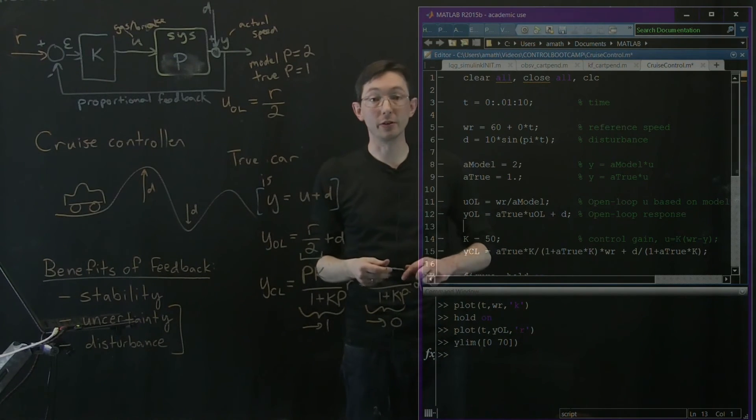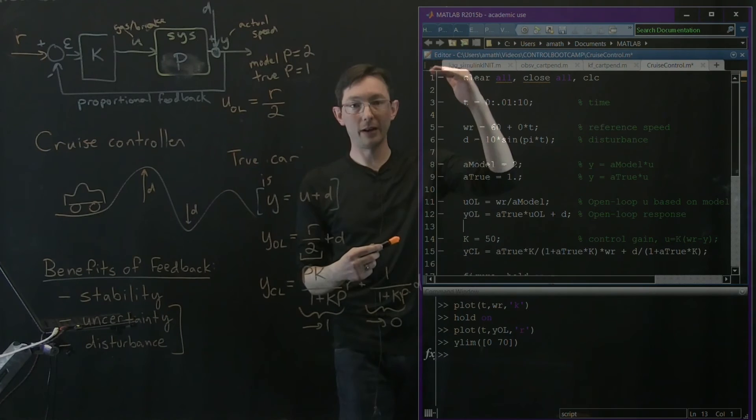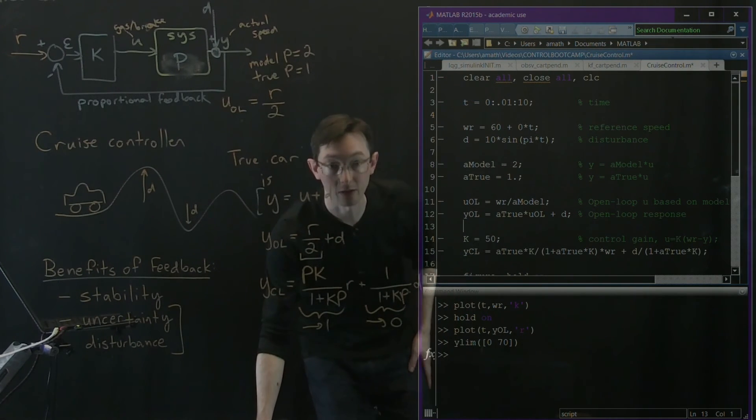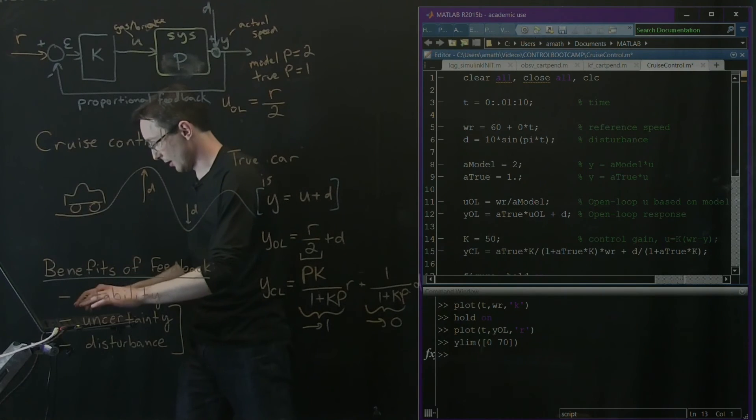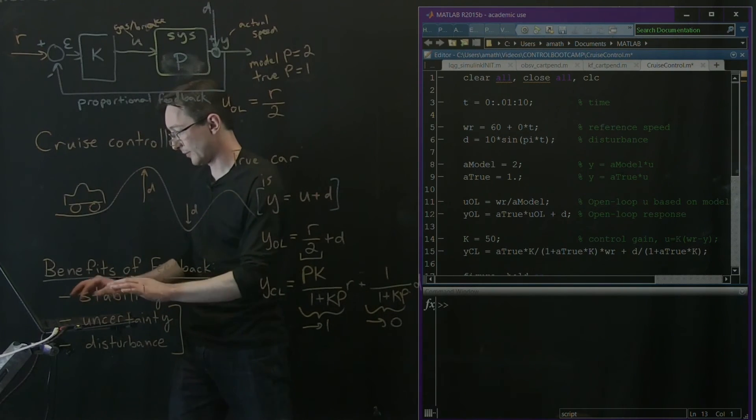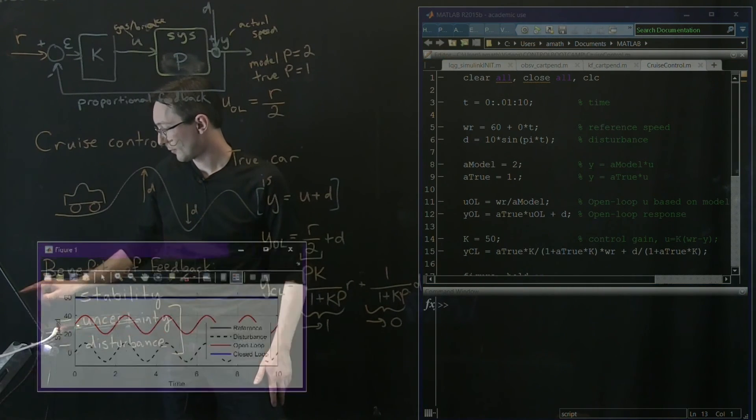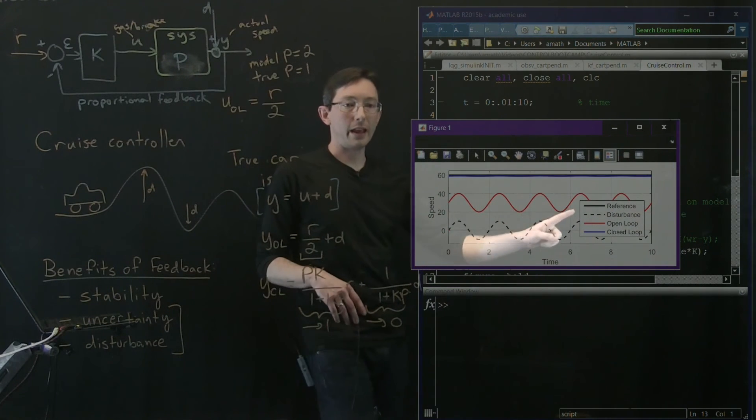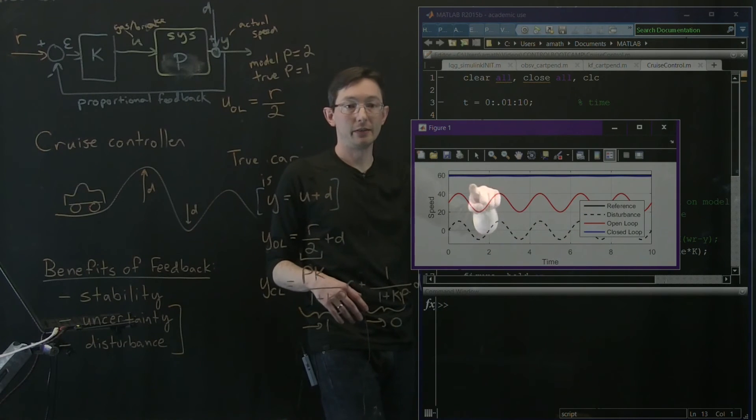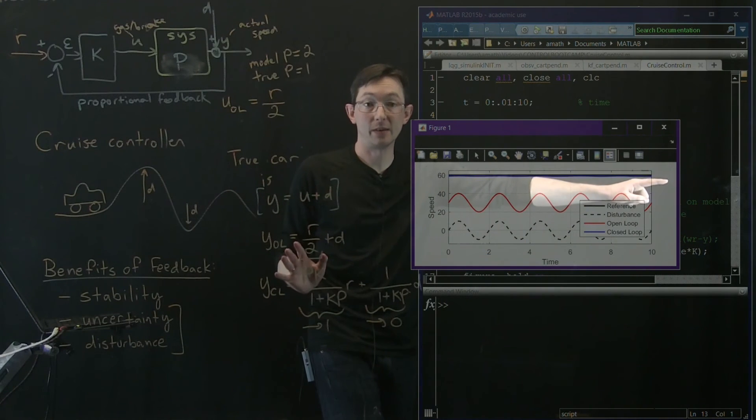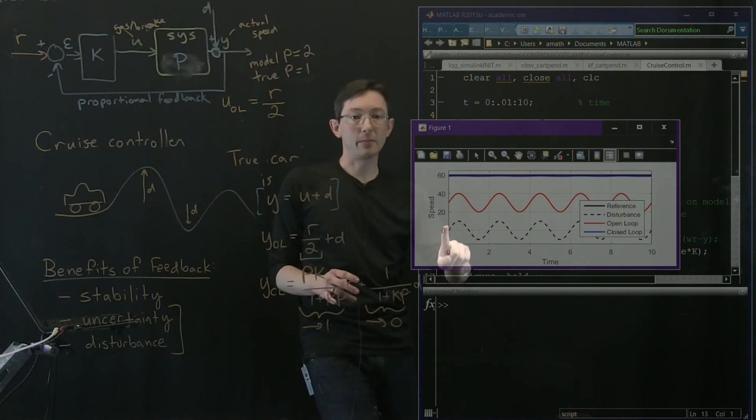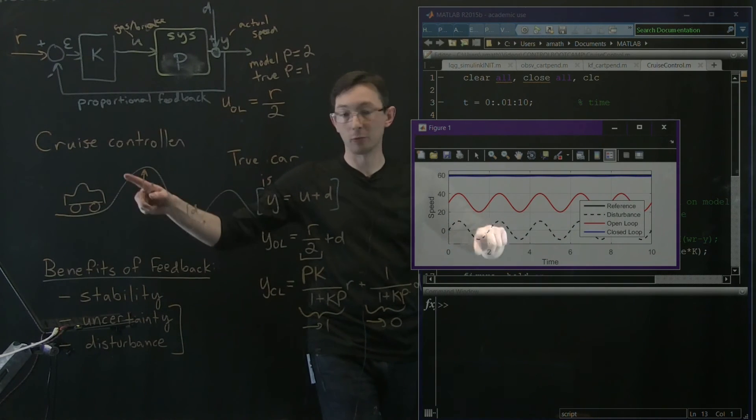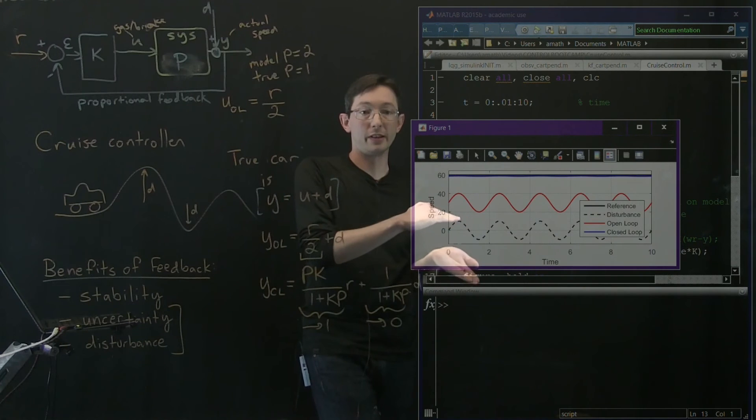So now we're going to plot our closed loop on top. So we're going to plot our reference, our open loop, and our closed loop, and we're going to see how they all compare. And let's just run this all at once. And I have some nice scripts to make it look a little cooler. But you can see, in black is my reference speed. That's just this line right here. I want to go 60 miles an hour. The disturbance here in the black dash line, this is the plus or minus 10 miles an hour just from the rolling hill. So I just want to show you the magnitude of the disturbance.